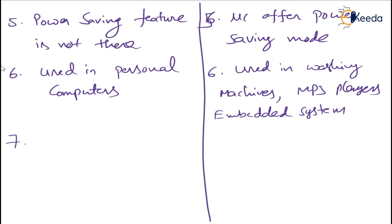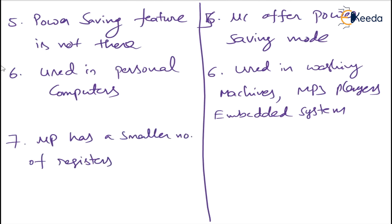Coming to the next point — registers. A register is a storage device; there are 8-bit and 16-bit registers. In the 8086 processor, 16-bit registers are used. A microprocessor has a smaller number of registers and all operations are memory-based. Whereas a microcontroller has more registers, and that is why programming is easier in a microcontroller.